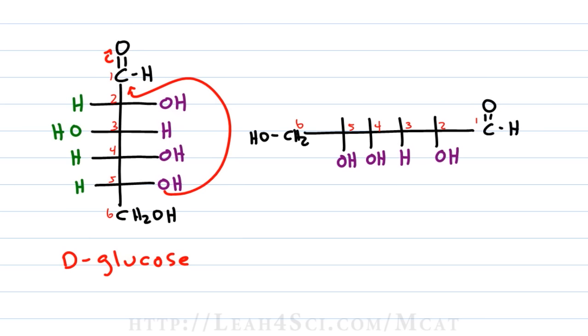And the trick is we're going to take all the purple carbons and drop them right down, whatever's on the right is going to be down so we have an OH on carbon two, H on three, OH on four, OH on five.